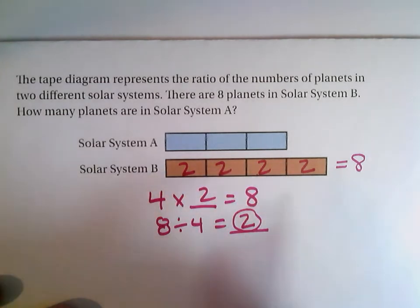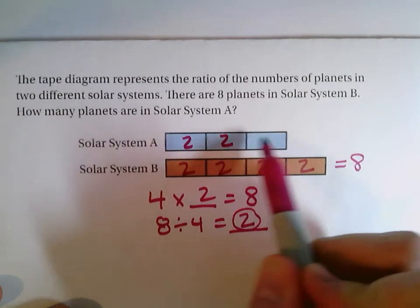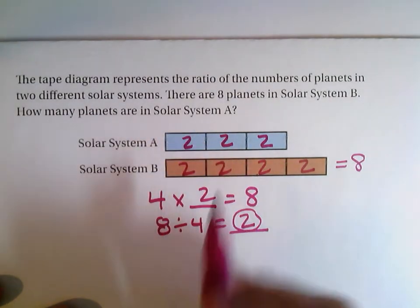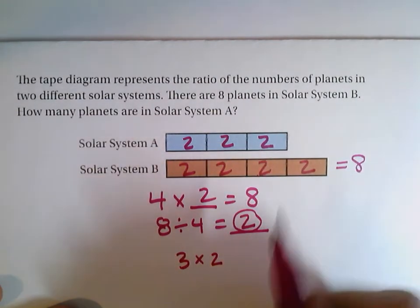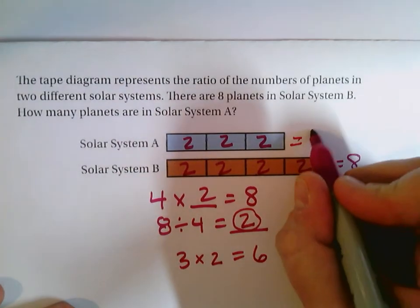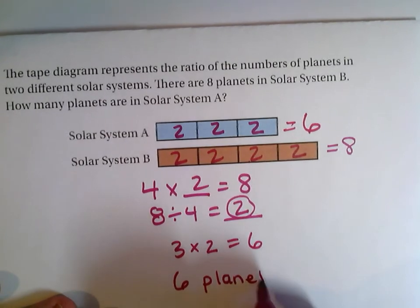If each of these parts are two, each of these parts are going to be two. So then I can say, okay, well, I have three parts of two. So I can do three times two, or I can do two plus two plus two. And that gives me six. So solar system A has six planets.